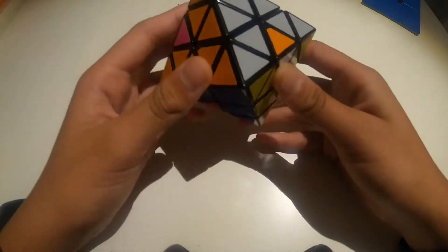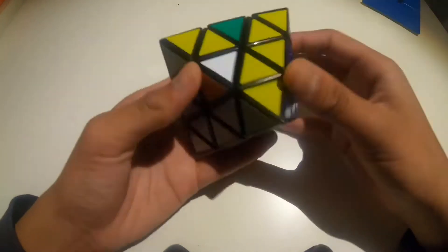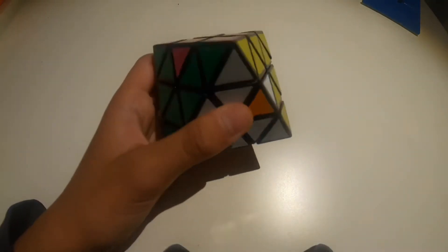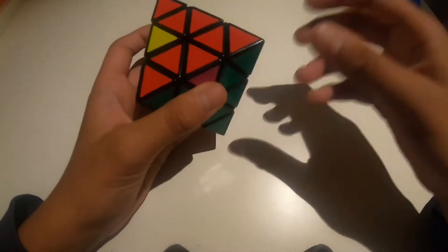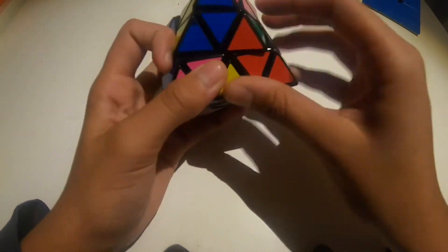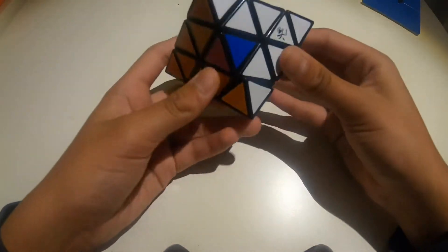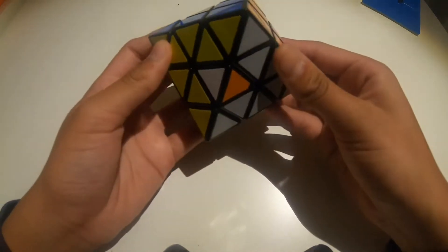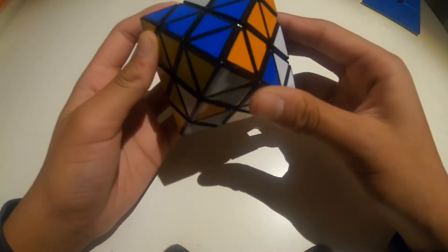Maybe the face turning octahedron or FTO will be more interesting. I think there is orientation that matters. Some puzzles like this, they don't have orientation, or orientation doesn't matter. Yeah, but this edge is flipped, so I think orientation might become a problem. But it shouldn't be too much of a problem.